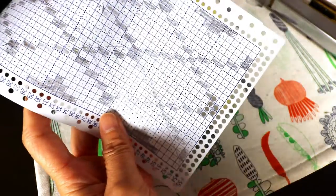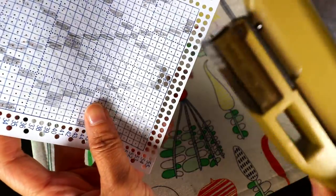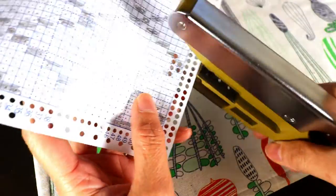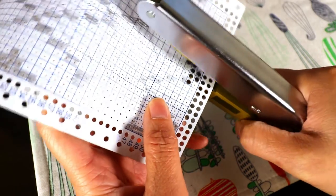To punch your card, just make sure the tip of your hand punch matches the little dot on the blank punch card.